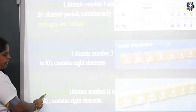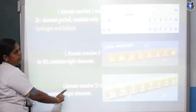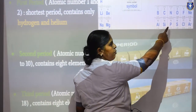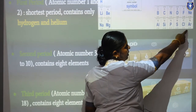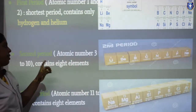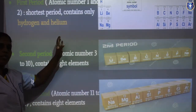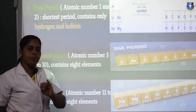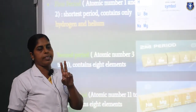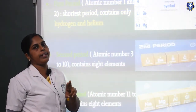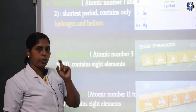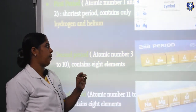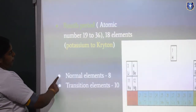Now let's see the third period — atomic numbers 11 to 18: sodium, magnesium, aluminium, silicon, phosphorus, sulfur, chlorine, and argon. 8 elements are present in this period also, so this is also a short period. To summarize: the first period is the shortest period with only 2 elements; the second period contains 8 elements and is a short period; the third period also contains 8 elements and is a short period.